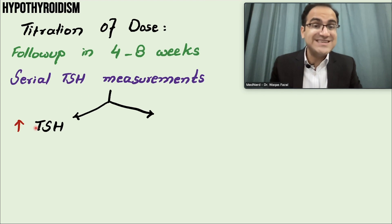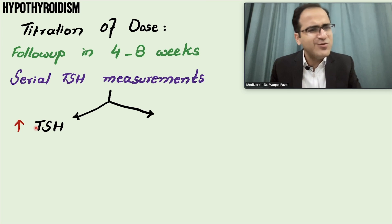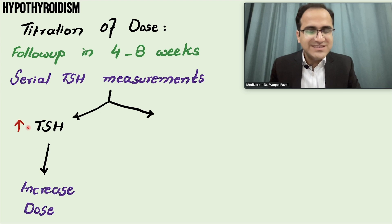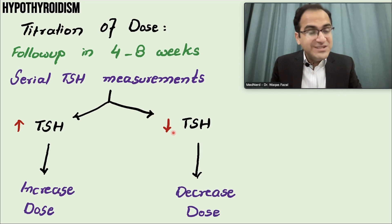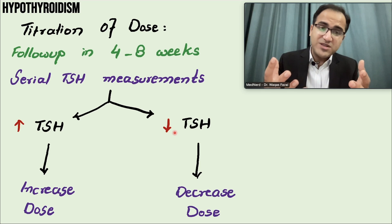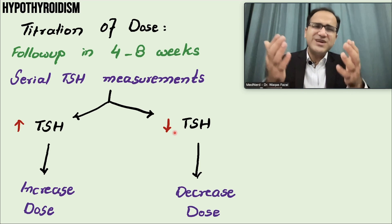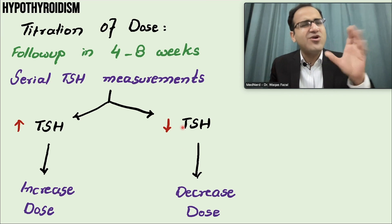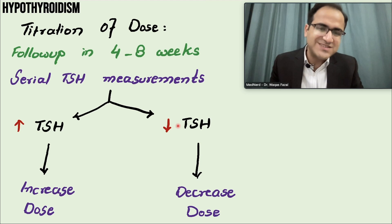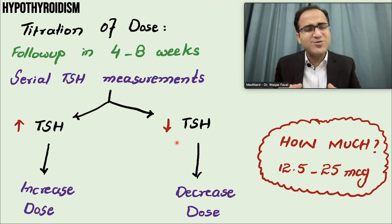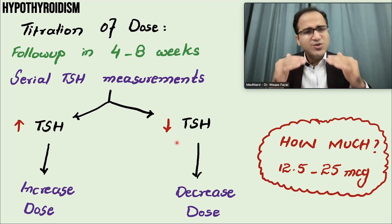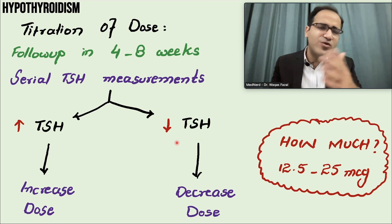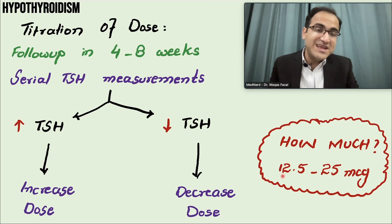If TSH levels are still high, it means the dose is insufficient and you need to increase it. If TSH levels are low, you have given too much and need to decrease the levothyroxine dose — TSH should remain in the normal range. Dose adjustments are made stepwise every 4 to 8 weeks.